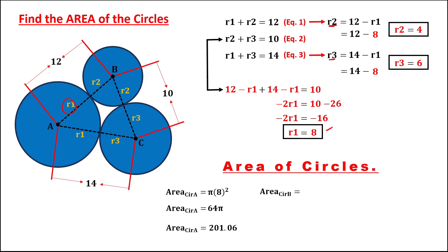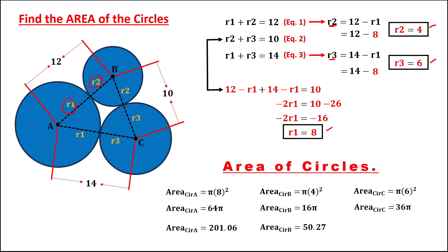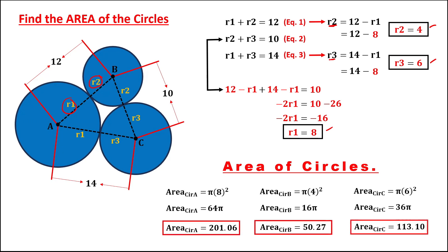To find the area of circle B, that's pi times 4 squared, because the radius of circle B is 4. This is equal to 16 pi, or the area of circle B is 50.27. Then for the area of circle C, we have pi times 6 squared, which is equal to 36 pi, or the area of circle C is 113.10. So these are now the areas of these three circles.